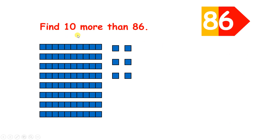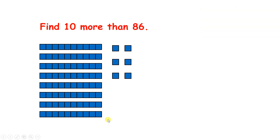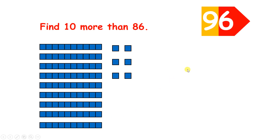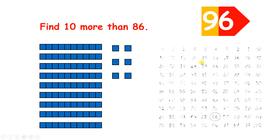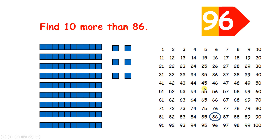Now find 10 more than 86. So if we add 10 to 86, we still have six units, but now we have nine 10s, so we have 96. And on a 100 square, to find 10 more, we move one place down.